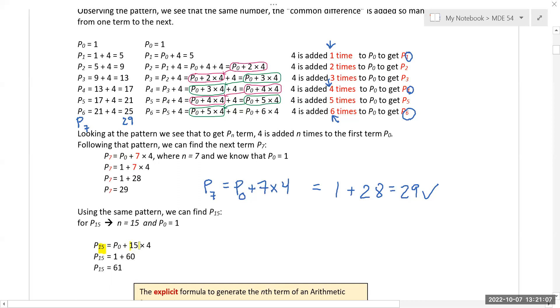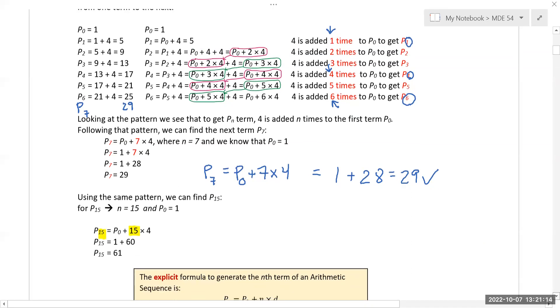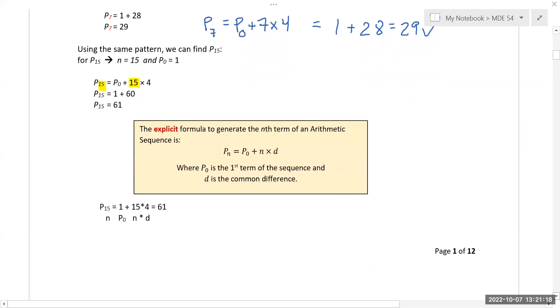This brings me to my explicit formula to get the nth term of an arithmetic sequence. An arithmetic sequence is P_n equals P_0 plus nd. P_n is whatever you're looking for, P_0 is your initial value, n is whatever your time is or what you're growing by, and d is the common difference. This is one of the formulas you'll want to know.